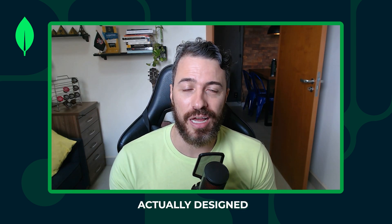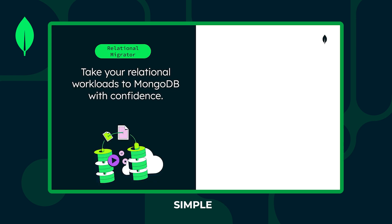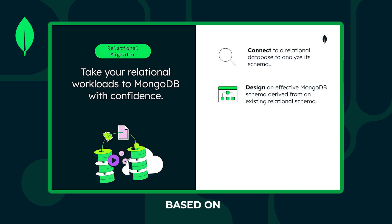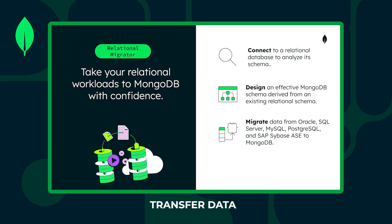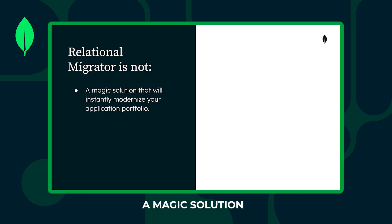And that's where Relational Migrator comes in — a tool designed to help you migrate your relational workloads to MongoDB. With Relational Migrator, the migration process becomes simple and well-defined, following four key steps. First, connect to your relational database and analyze its schema. Next, create an optimized MongoDB schema based on your existing relational model. Once the schema is ready, transfer your data from Oracle, PostgreSQL, or MySQL to MongoDB, minimizing risks and downtime. And finally, take your migration a step further by automatically generating application code and converting SQL queries. It's important to keep in mind that Relational Migrator is not a magic solution that will instantly modernize your applications — it requires careful planning and doesn't automatically fix everything.